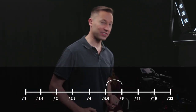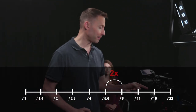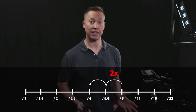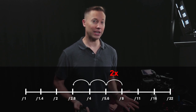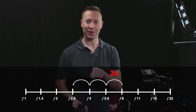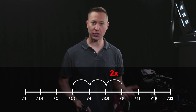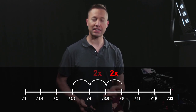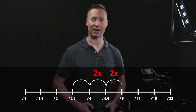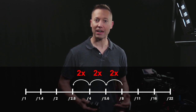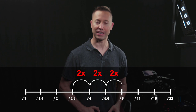F stops represent a doubling of the amount of light let through the lens. So if I open up my aperture by one F stop, I'm letting twice the amount of light pass through to the imaging sensor. What happens if we increase our aperture by three stops? If you guessed we increase the light value six times, you're wrong — we're actually increasing it eight times. The first stop doubles the light; the second stop doubles it again, giving us four times the light; and opening a third F stop doubles it again, giving us eight times the original amount of light.